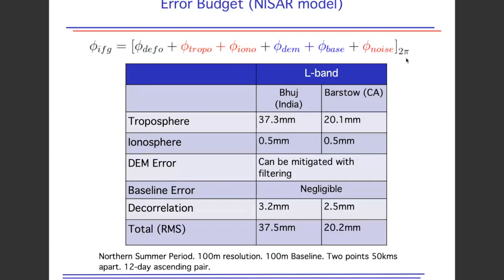For the NISAR mission, JPL built a model that tries to estimate how much error we expect in interferograms globally. This table shows the relative contributions of different components for an interferogram measuring deformation between two points 50 kilometers apart. The primary source of error is troposphere, at least at mid-latitudes. Closer to polar regions, ionosphere could also play a much more significant role, and ionosphere activity also changes through the solar cycle. Roughly, we have about 4 centimeters of error between two points 50 kilometers apart from a single interferogram.